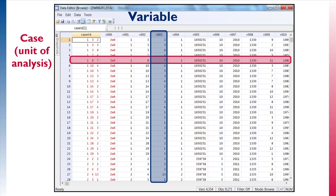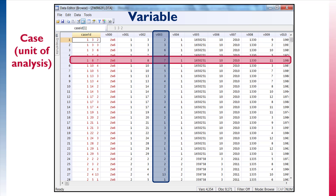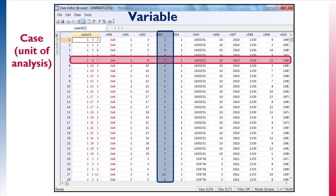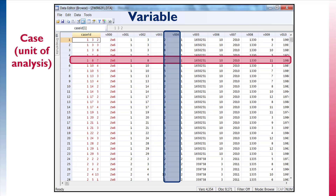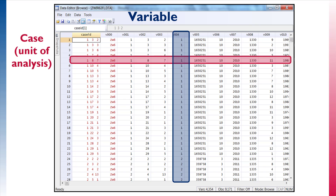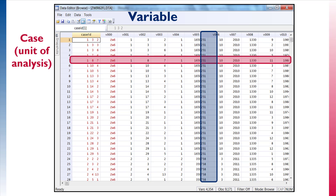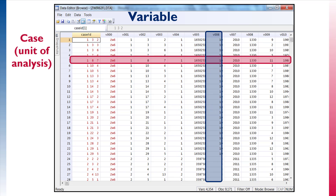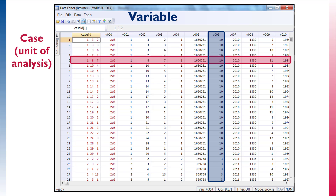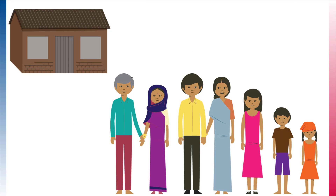We can select a case and begin to learn something about this woman. For example, as we move across the columns, or variables, we can learn which region she resides in, whether she lives in an urban area, whether she owns a telephone, or whether she has access to clean water in her home.